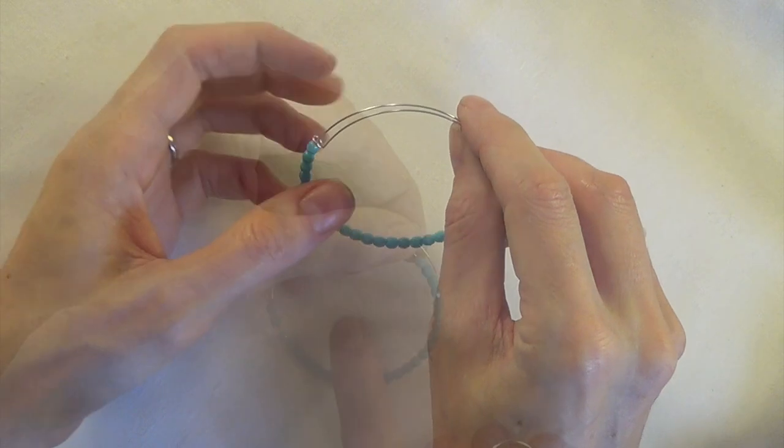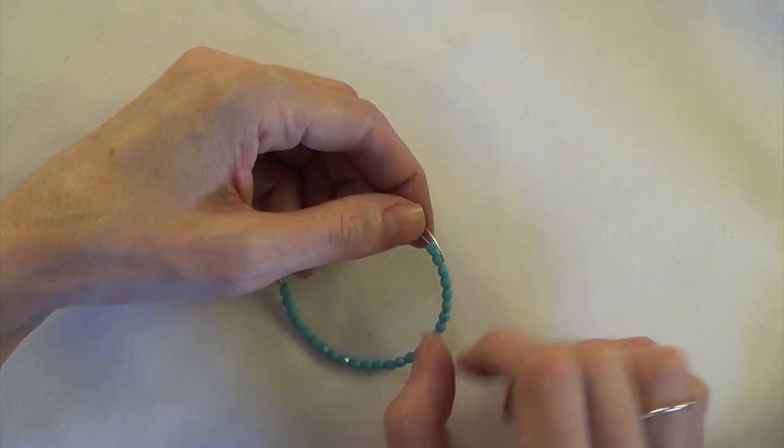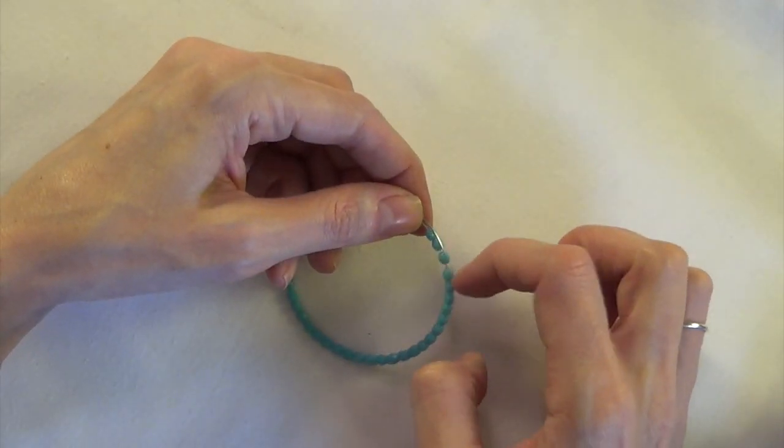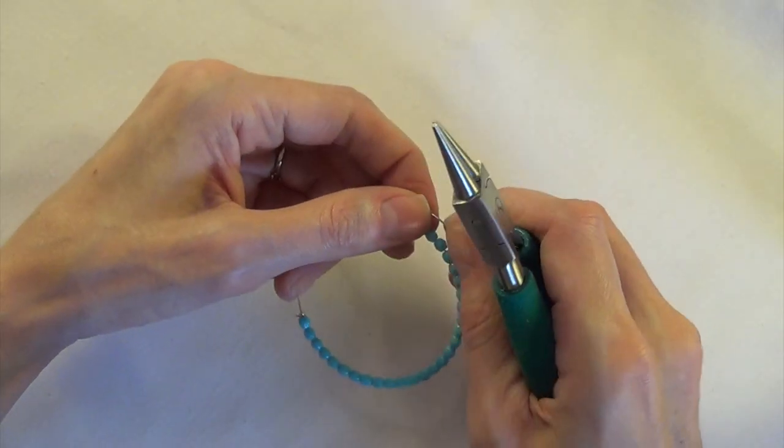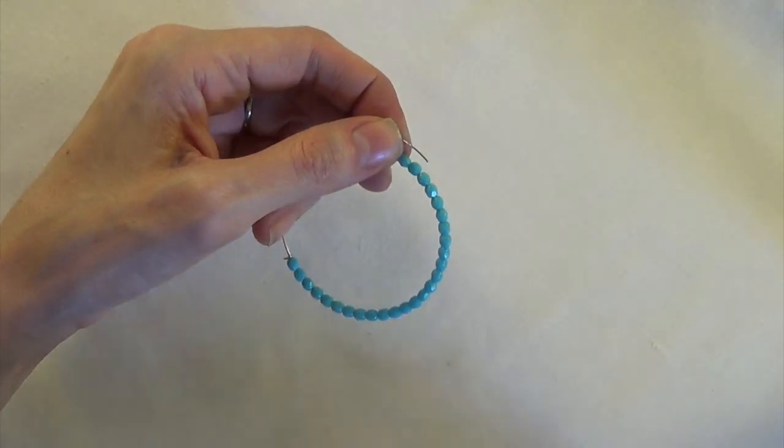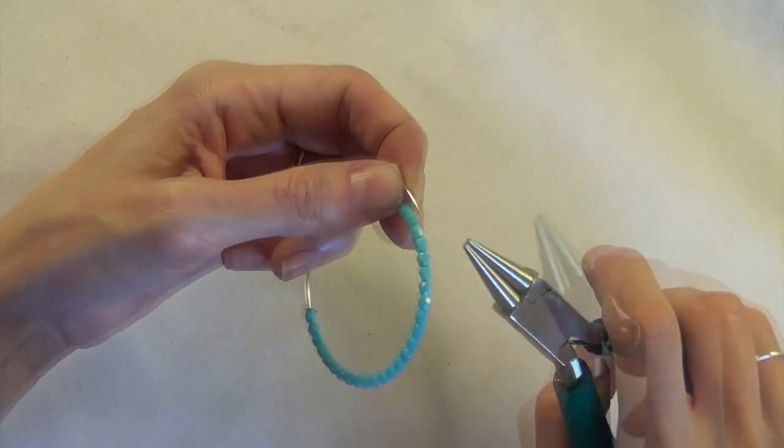At this point you'll want to double check and make sure you just have about three eighths of an inch or about nine to ten millimeters of wire overlapping the last couple of beads here. That's about how much wire you'll need to make a loop and have that loop land in the right spot outside the beads.